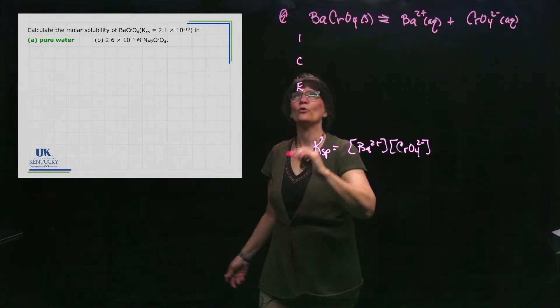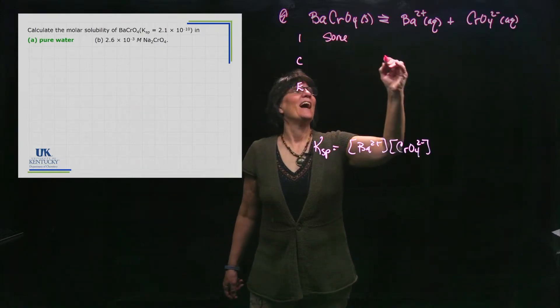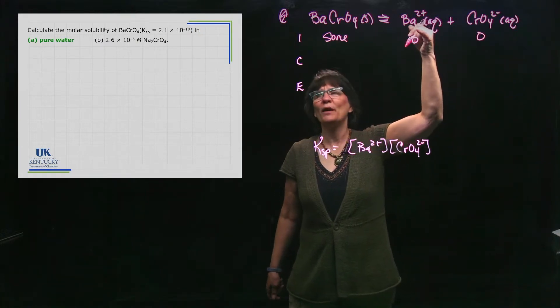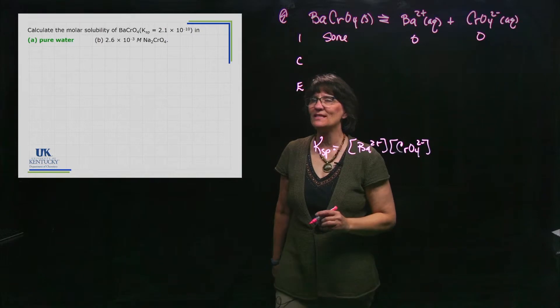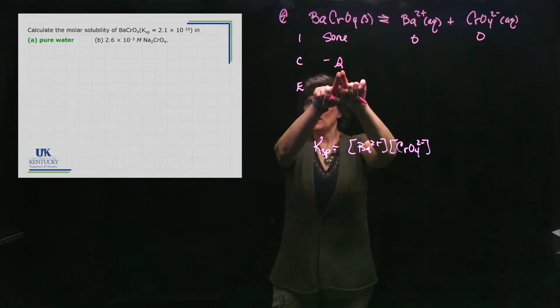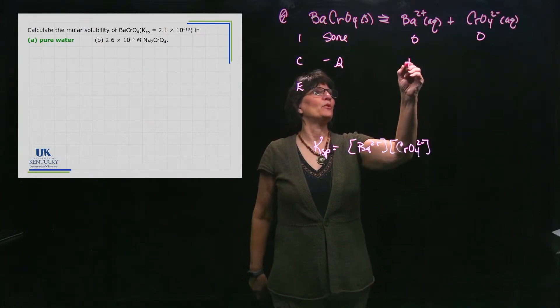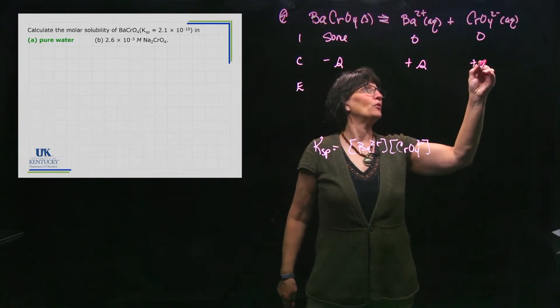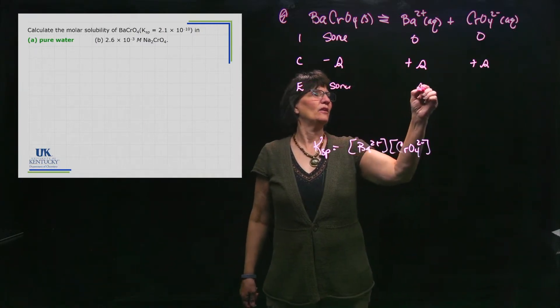When I set up my ICE table, I see what the initial concentration is. I don't know the concentration because this is a solid I dumped some in. Before the reaction, it's in pure water. There is no barium in pure water. There's no chromate in pure water, so those are legitimate zeros. I will dissolve some. S stands for molar solubility, how much of this dissolves. I produce here and I produce here, and I end up with some S and S.